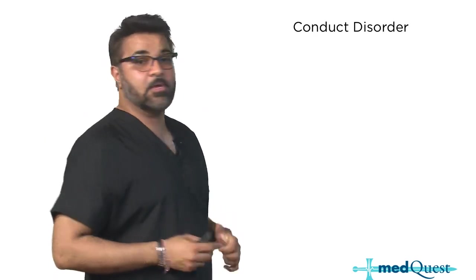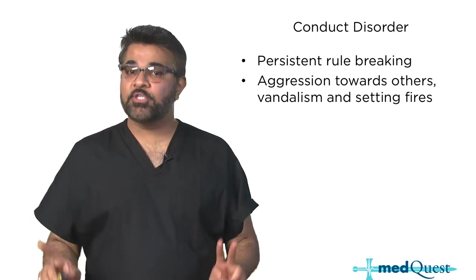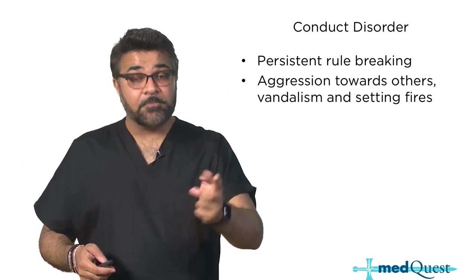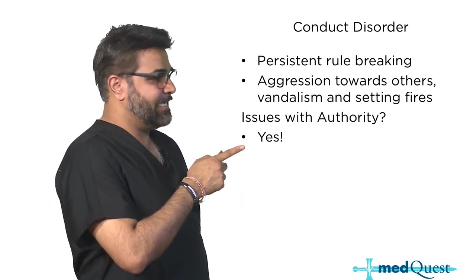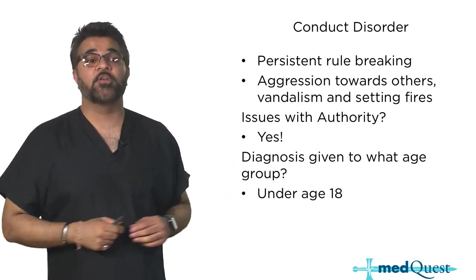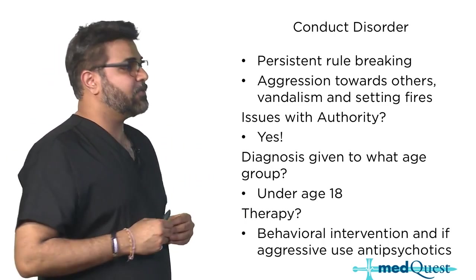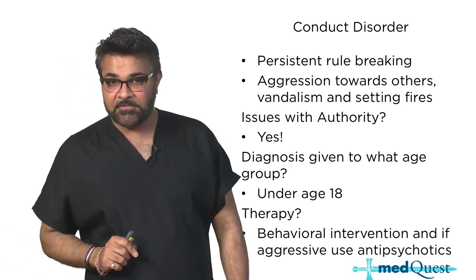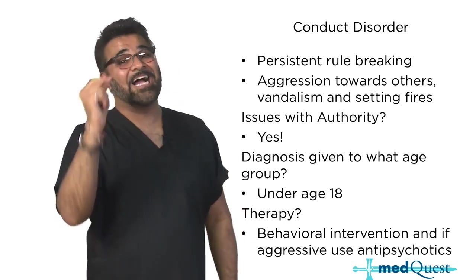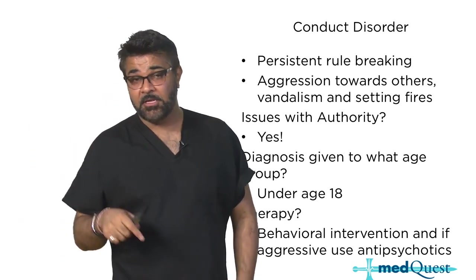Conduct disorder is a child under the age of 18 who has persistent rule-breaking and aggression towards others, with a history of vandalism, setting fires, and hurting animals. They have an overwhelming issue with authority, and the diagnosis has to be made before age 18. Therapy is behavioral intervention, and if they're aggressive, antipsychotics. Big fact: conduct disorder has a high association with antisocial personality disorder, which we'll talk about later in this section.